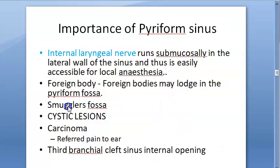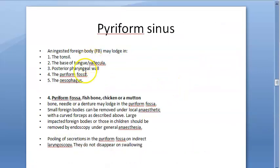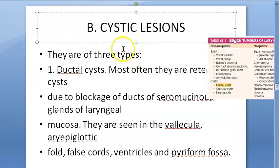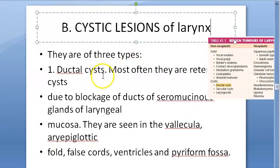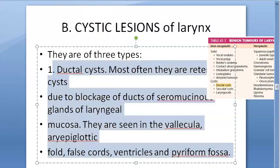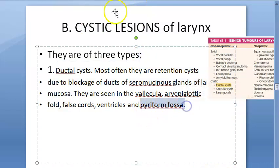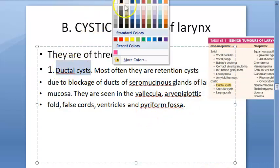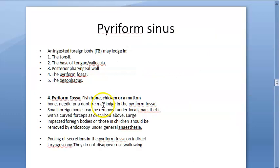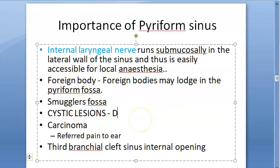Regarding cystic lesions of the larynx, there are three types: ductal, saccular, and laryngocele. Among these, a ductal cyst can be seen in the pyriform fossa specifically.